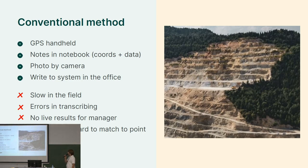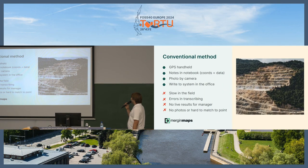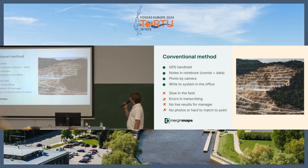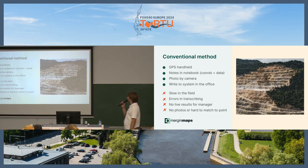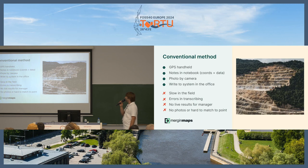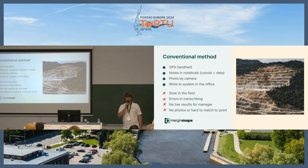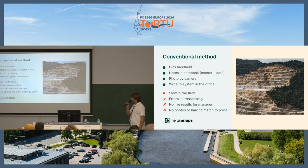Let's see what the conventional method is if you want to gather some data in the field. You may or may not have a GPS handheld or mobile phone. You have your notebook with pen and you write down the coordinates and data. Maybe you have a camera, you take photos and try to mark which photos are where. Then you come to the office and put it in QGIS or Excel. It's very slow, there are many errors in transcribing, you can lose paper, and there are no live results.